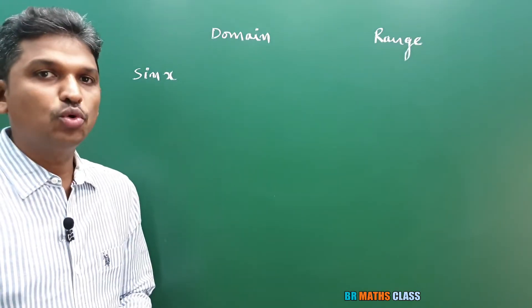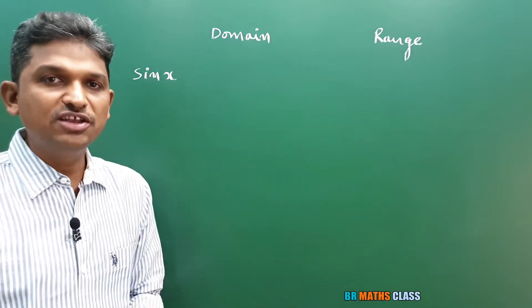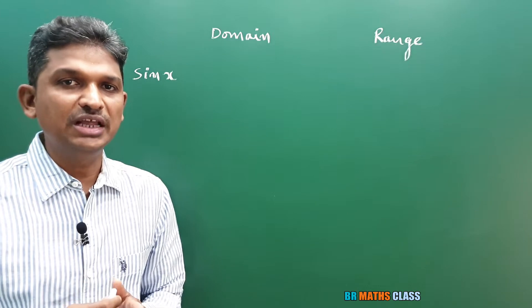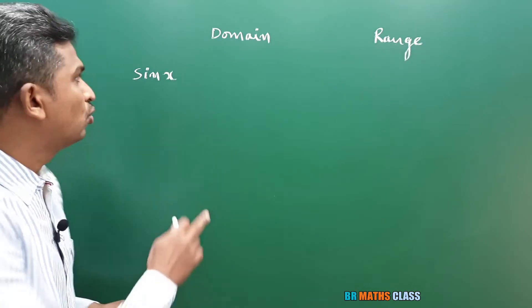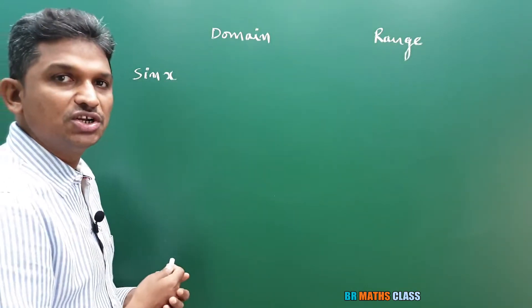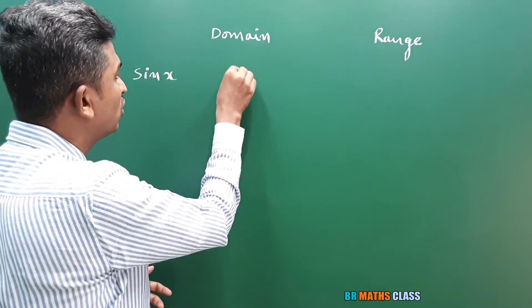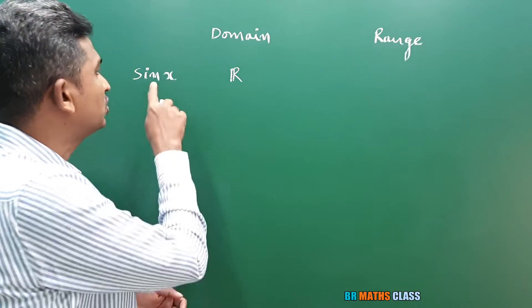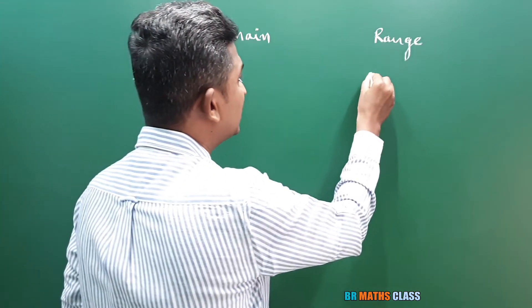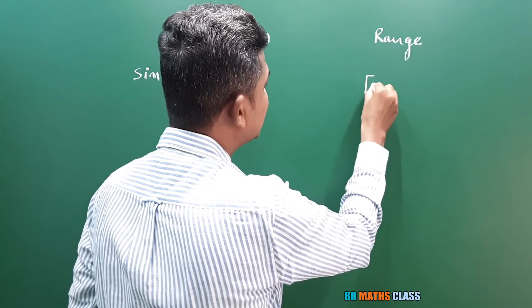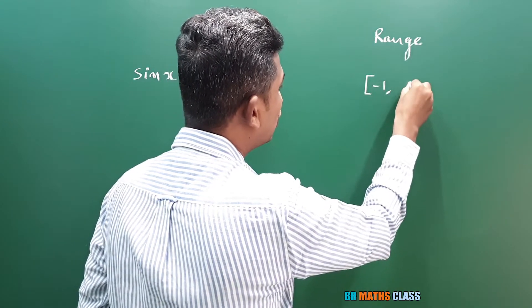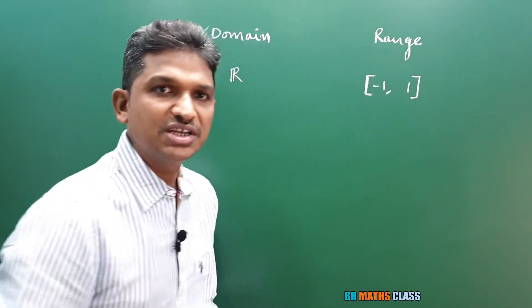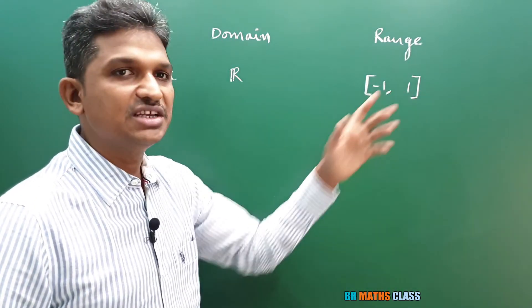Let us observe sin x — what is the domain and range of sin x? If you observe the graph of the sin function, what I am explaining will be easy to understand. The domain of sin function is all real numbers, so whatever x value you take, sin x is defined. When you observe the graph of sin function, you can see that the graph always lies between minus 1 and plus 1. So the range of sin function is the closed interval minus 1 comma 1.